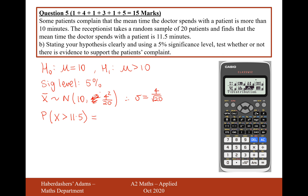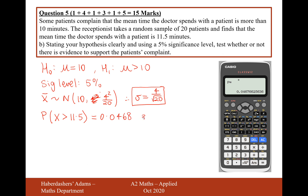Let's do this calculation on the calculator. It's going to be mode 7, again in normal CD mode. We want the lower boundary to be 11.5 and no upper boundary. We now have changed the standard deviation because we're working with a sample of 20 people, so it's 4 divided by the square root of 20. The mean still stays the same as 10. And the probability here is 0.0468 to three significant figures.